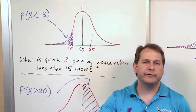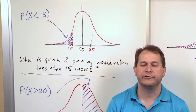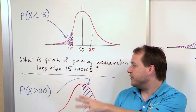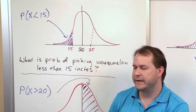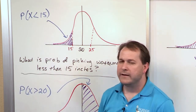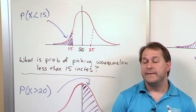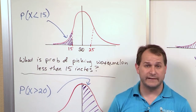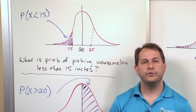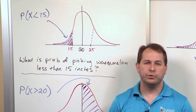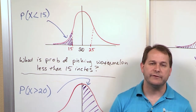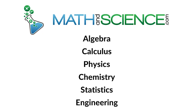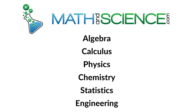We're inching our way along. We've introduced the normal distribution, introduced some properties, talked about areas, and gotten comfortable with thinking about greater than or less than. In the next sections, we'll learn to use the tables to actually get real answers to problems. Learn anything at mathandscience.com.